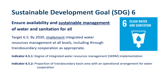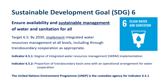Indicator 6.5.1 assesses the degree of IWRM implementation in each country. Indicator 6.5.2 specifically deals with transboundary cooperation. Data for 6.5.2 is collected in a separate process, though focal points from 6.5.1 and 6.5.2 should communicate with each other to harmonize reporting as far as possible. UNEP is the custodian agency for Indicator 6.5.1.